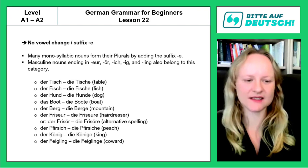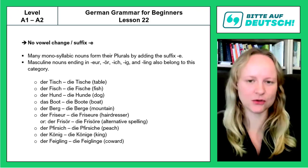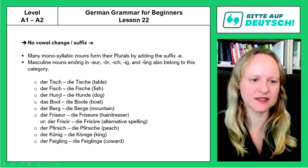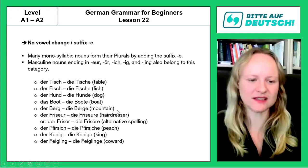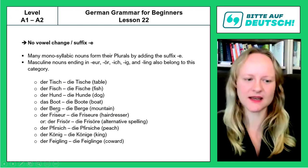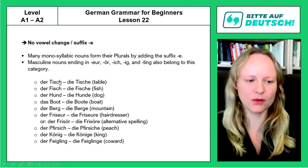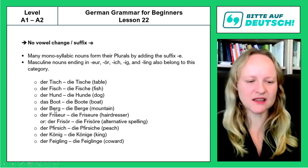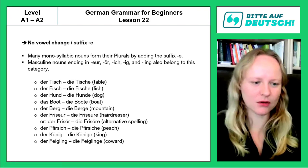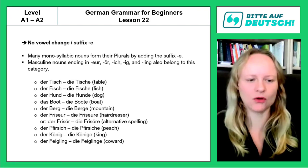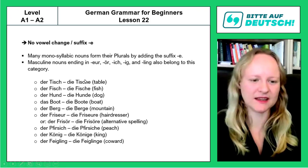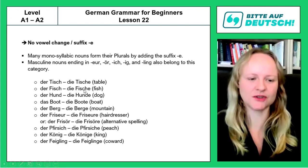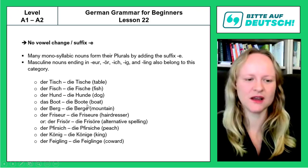Now let's analyze this list according to the rules. From Tisch up until Berg/Berge, you will see all of the nouns in this list are monosyllabic — they have one syllable only. And they often, but not always, tend to be either masculine or neuter in this category. We will add -e to the end: Tisch→Tische, Fisch→Fische, Hund→Hunde, Boot→Boote — but we do nothing else to the rest of the noun.